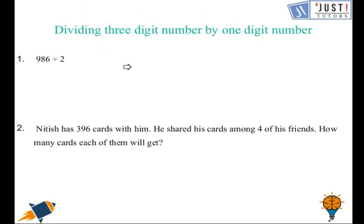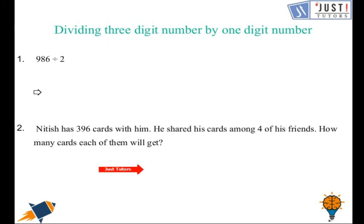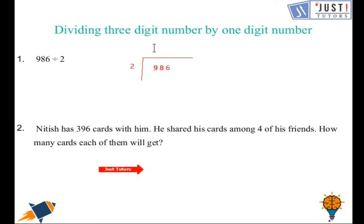Let's discuss a few more practice questions for division of a three-digit number by a one-digit number. We have 986 divided by two. Let's set up the bus stop method — 986 goes inside, two goes outside. Two goes into nine four times because two times four is eight.